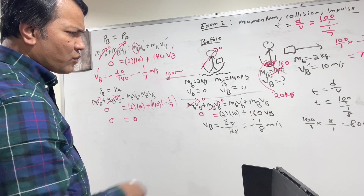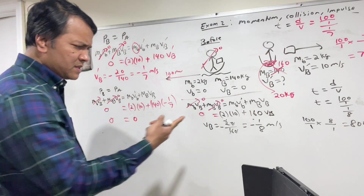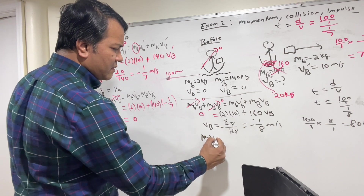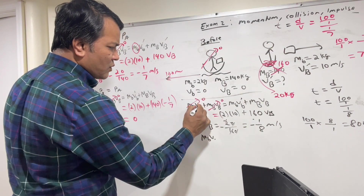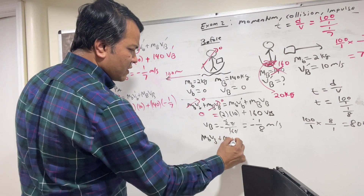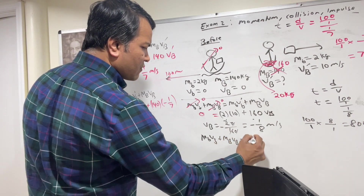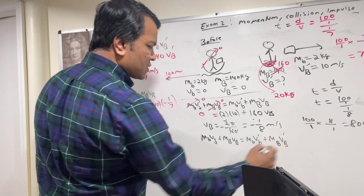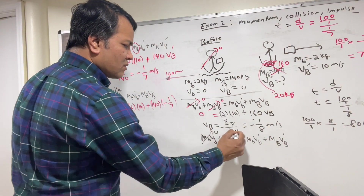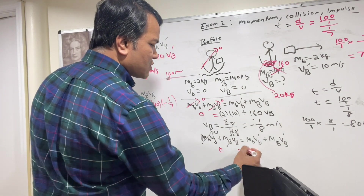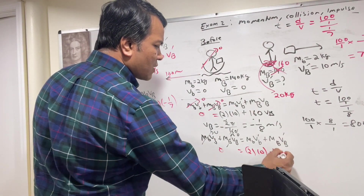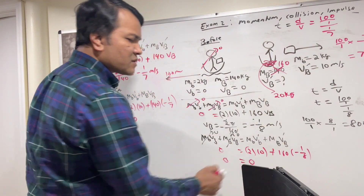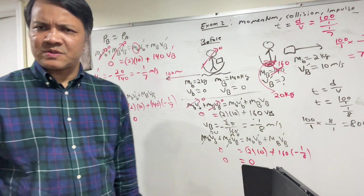Now we check whether momentum is conserved for this case as well. M_book × V_book + M_boat × V_boat = M_book × V_book' + M_boat × V_boat'. This is 0 before. After: 2 × 10 + 160 × (−1/8) = 20 − 20 = 0. So 0 equals 0 — momentum is conserved again.